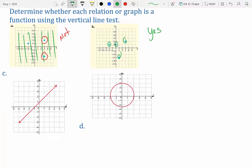c is a line. All lines are functions. In d, we have a circle. A circle is not a function. And you can just see all of these x values on top of each other.